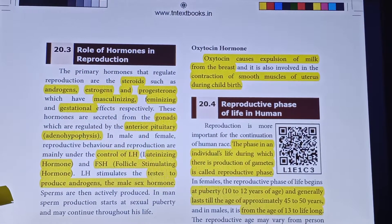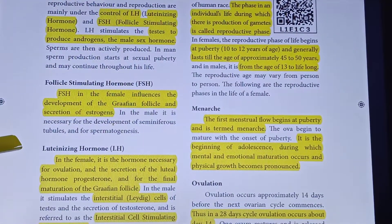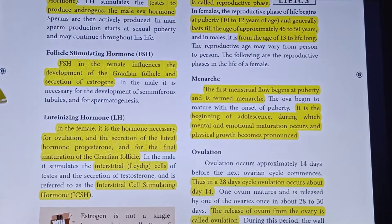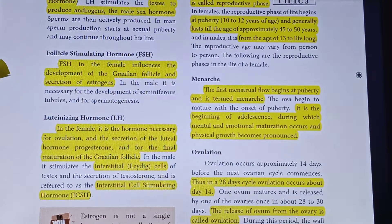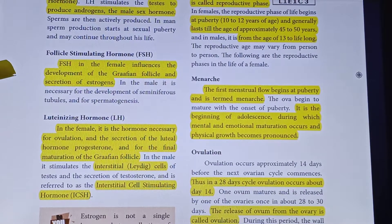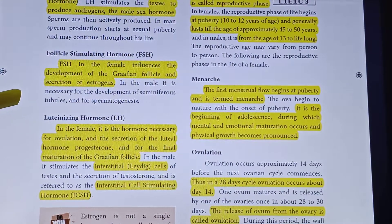Androgen stimulates the testes to produce sperms, which stimulates the male body to attain puberty and sexual maturity. Sperms are produced and continue throughout his lifetime. FSH in females influences the development of the Graafian follicle and the secretion of estrogen. The Graafian follicle matures over time and releases the ovum. In males, FSH is necessary for the development of seminiferous tubules.